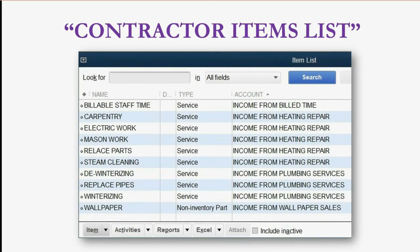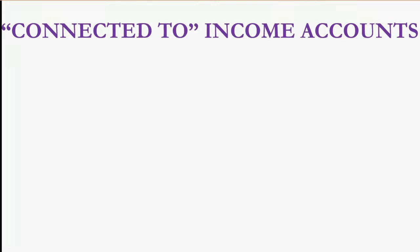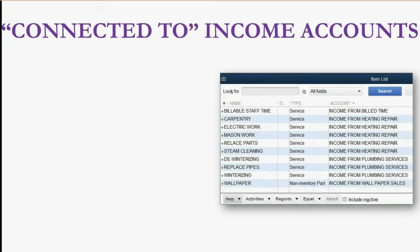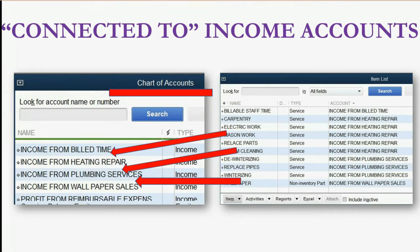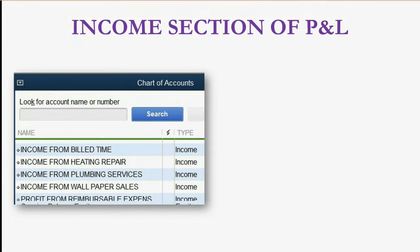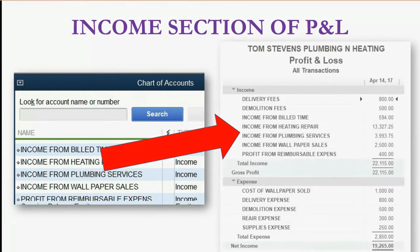This is the items list that we have been using for the course. We set these items up at the beginning of the course when we set up everything for your contractor file. These items are connected to income accounts that you had put in the chart of accounts when you originally set up the file. You need several income accounts in your chart of accounts if you want to see a detail of the income section of your profit and loss.